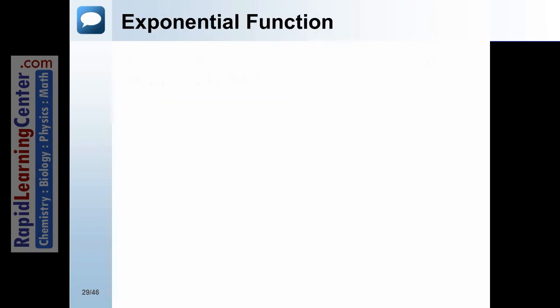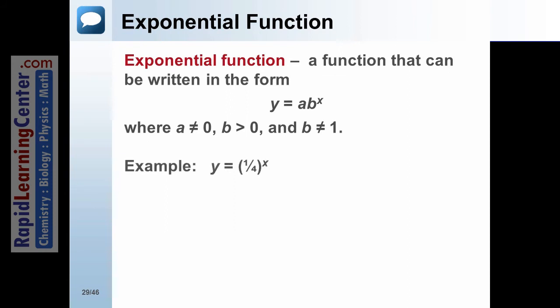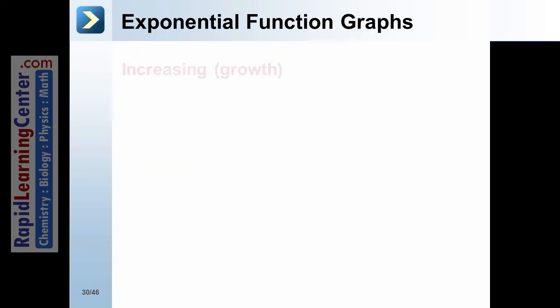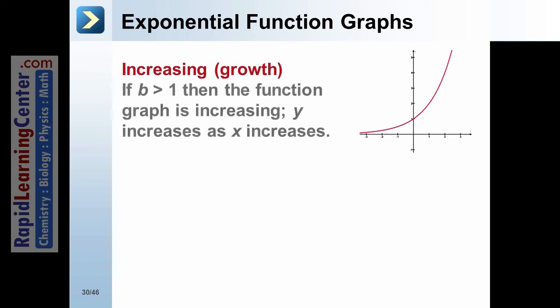Connect the points with two rays that meet at the vertex to complete the graph. An exponential function is a function that can be written in the form y equals a times b to the x, where a cannot equal 0, b is greater than 0, and b cannot equal 1. An example is y equals one-fourth to the x power. Increasing exponential functions are known as exponential growth functions. If b is greater than 1, then the function graph is increasing — y increases as x increases.